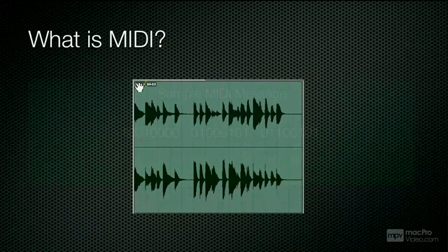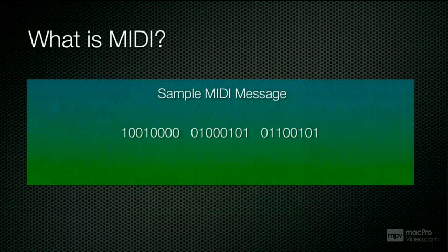With MIDI, the only thing you're actually recording are ones and zeros. You then tell Pro Tools where to direct those ones and zeros. Here we have a sample MIDI message — just ones and zeros.